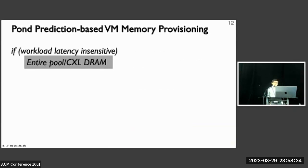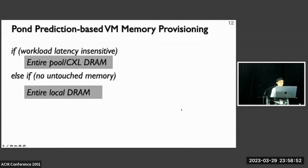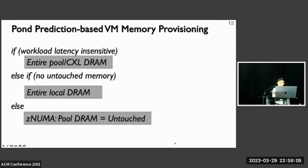In terms of memory allocation for the VMs, we use prediction models based on different allocation schemes. For latency-insensitive VMs, their memory can be directly allocated entirely from the pool without any performance impact. For latency-sensitive VMs predicted to have zero untouched memory, we allocate the VM entirely using local DRAM. Otherwise, we use the zNUMA to back the VM memory and try to size the pool DRAM size to be equal to the amount of predicted untouched memory.